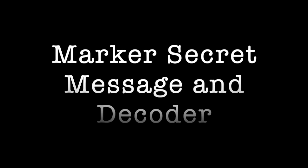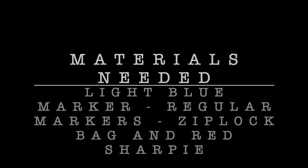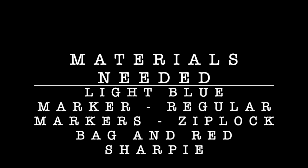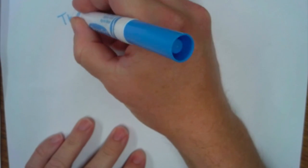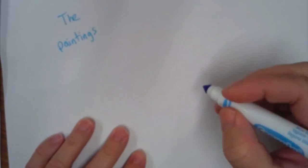Marker secret message and decoder art project. Materials needed: light blue marker, regular markers, ziplock bag, and a red Sharpie. Now the light blue marker is the most essential. Teal or dark blue will not work.